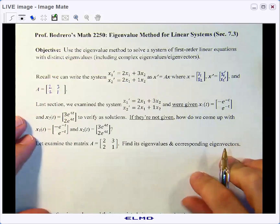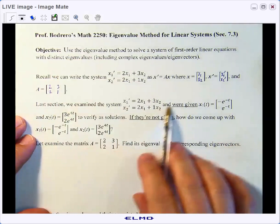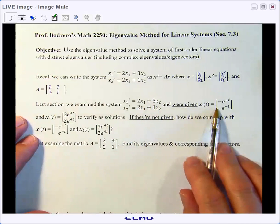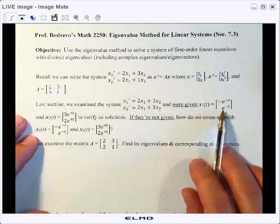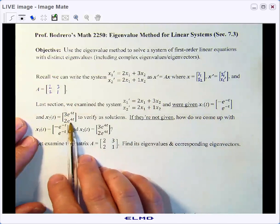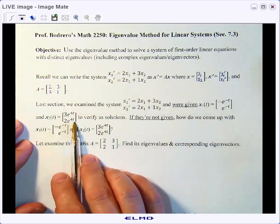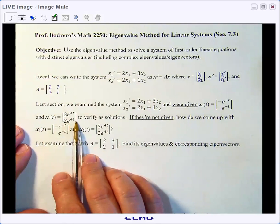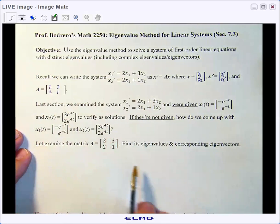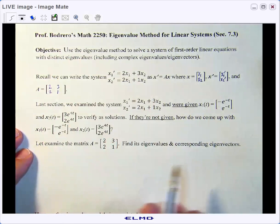Last time we examined this exact system, and we told you that the solutions were negative e to the negative t, e to the negative t, and 3e to the 4t, 2e to the 4t, and we even verified that those were in fact solutions. But if they're not given to you, how do you come up with those guys? Well, let's go ahead and talk about that.